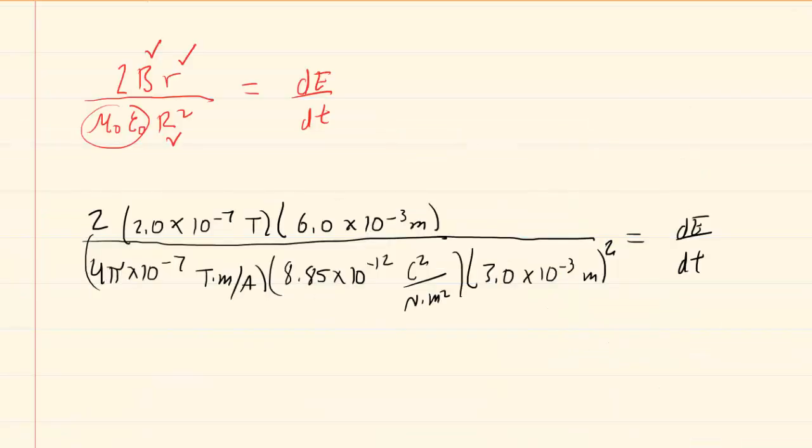All the known quantities have been plugged in, just a couple of points here. Remember that the radii were given in millimeters, so we've converted them to meters by multiplying by 10 to the minus 3. Make sure you do that. And then we've plugged in the constant values. We have that mu naught and that epsilon naught. Those are constant values.